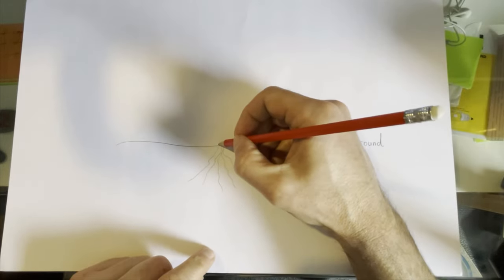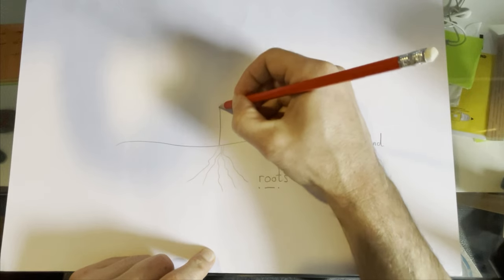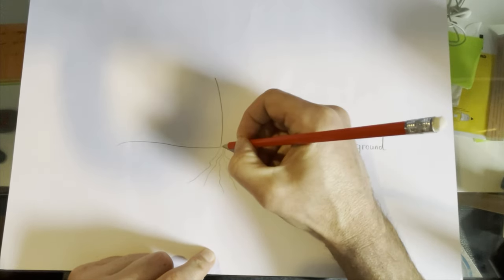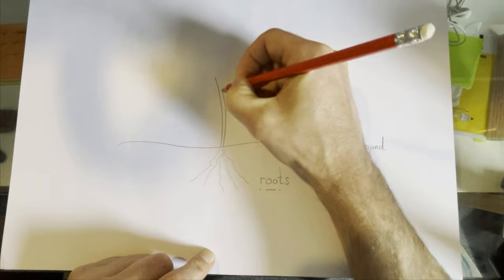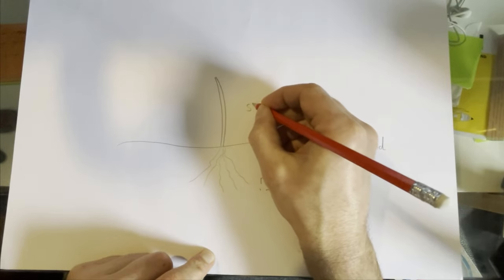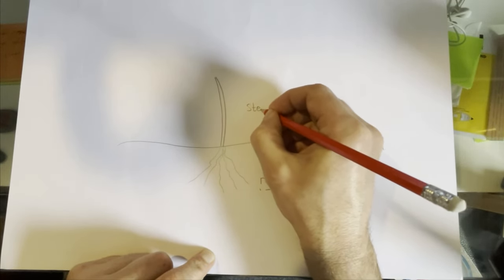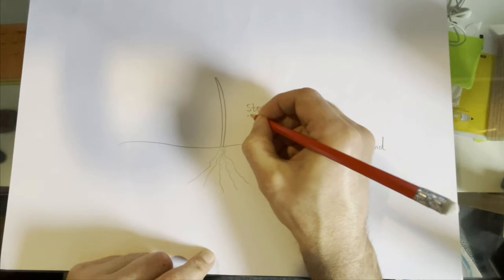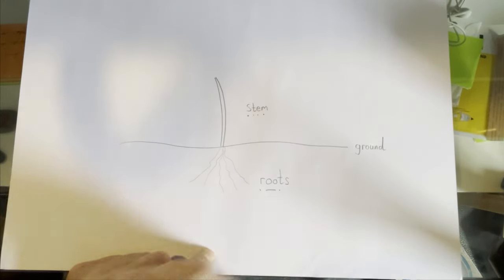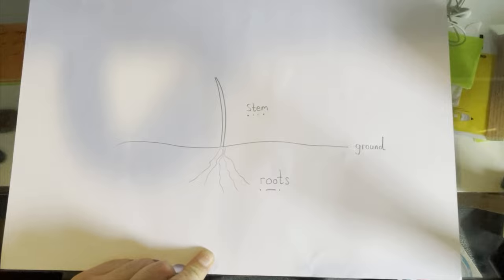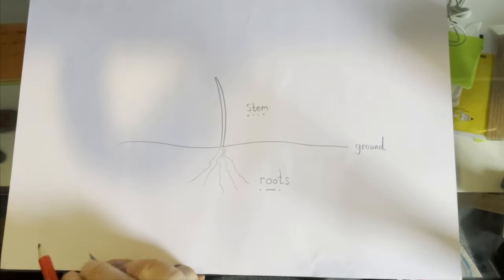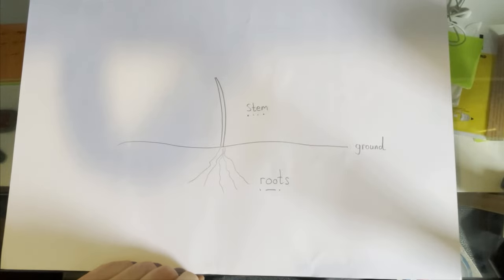Then, above the ground, we have this. This is called the s-t-e-m. Stem. The stem of the plant. It's the thing that holds everything up in the air.